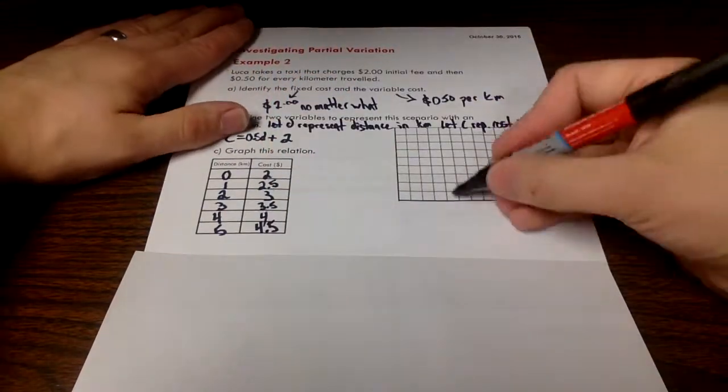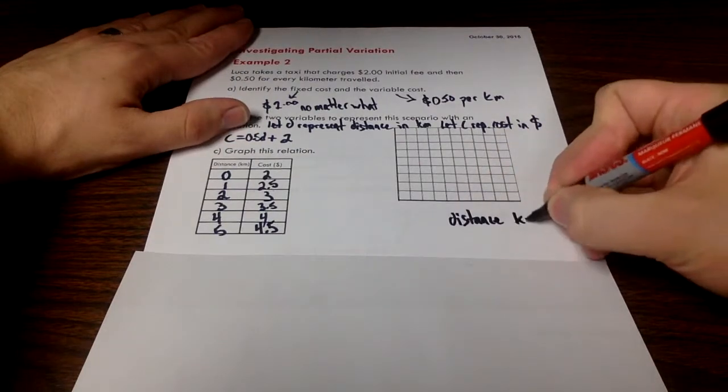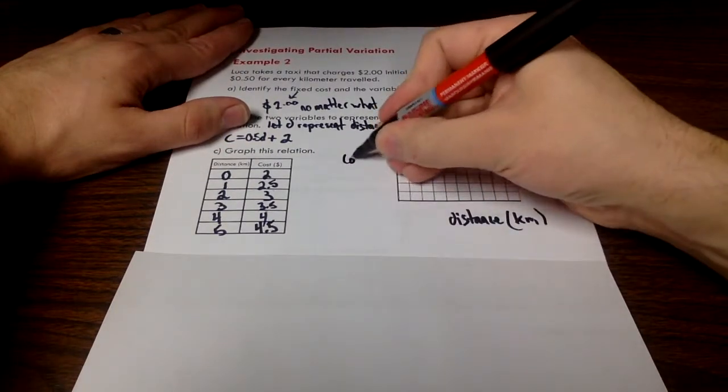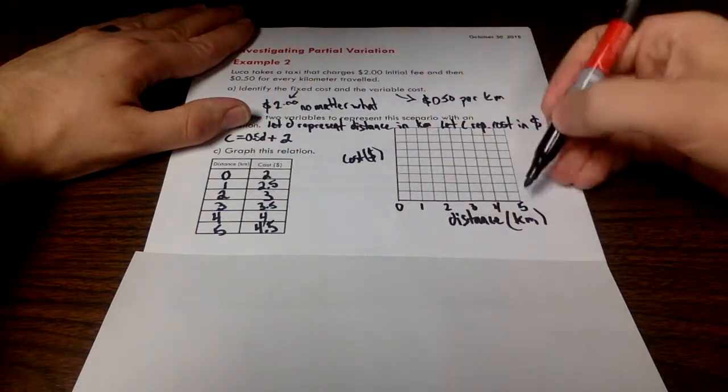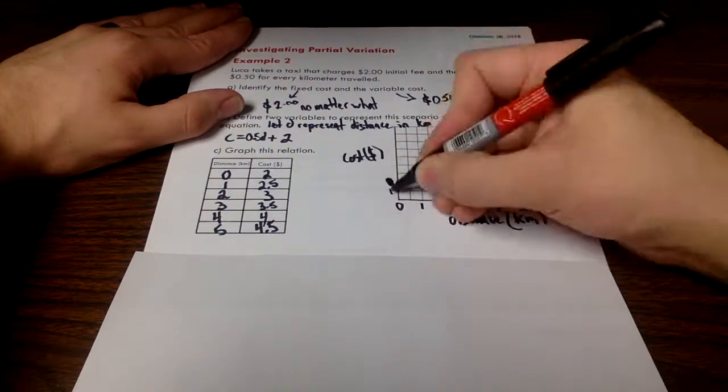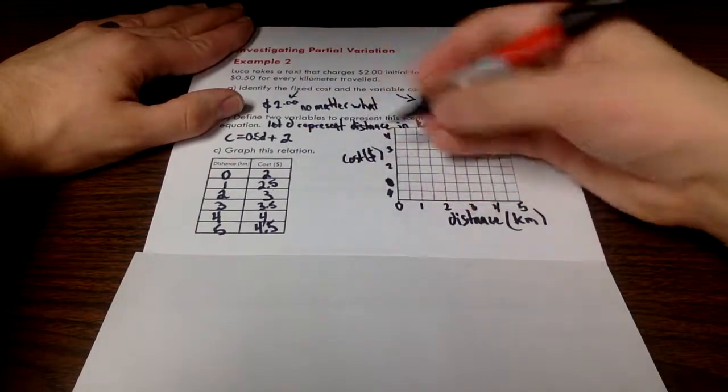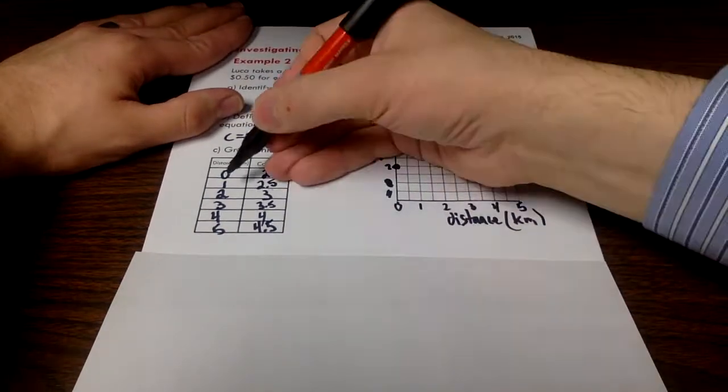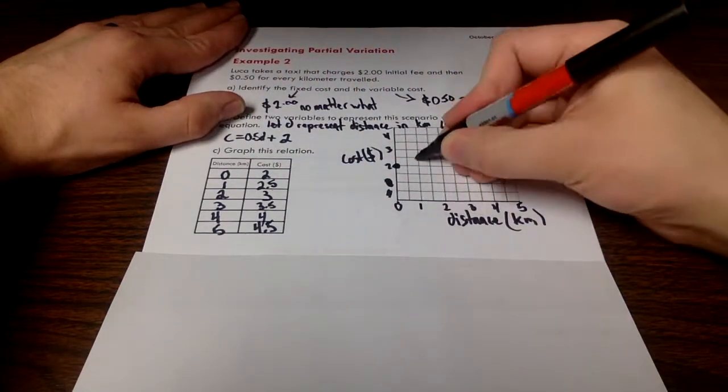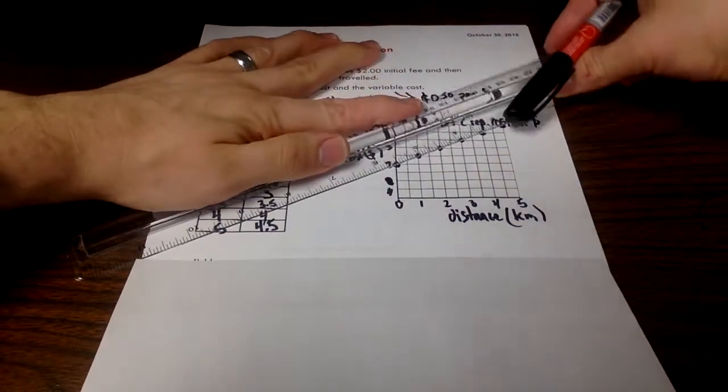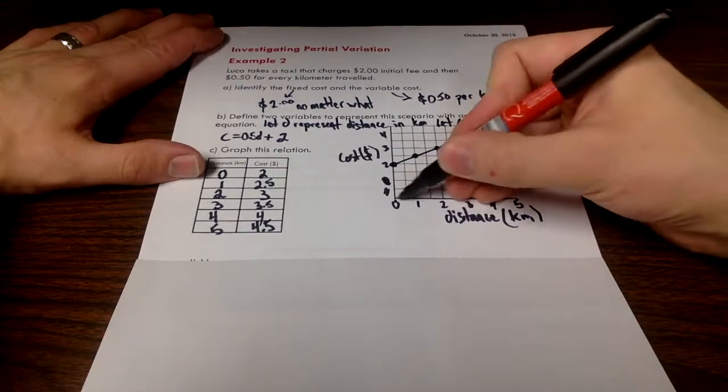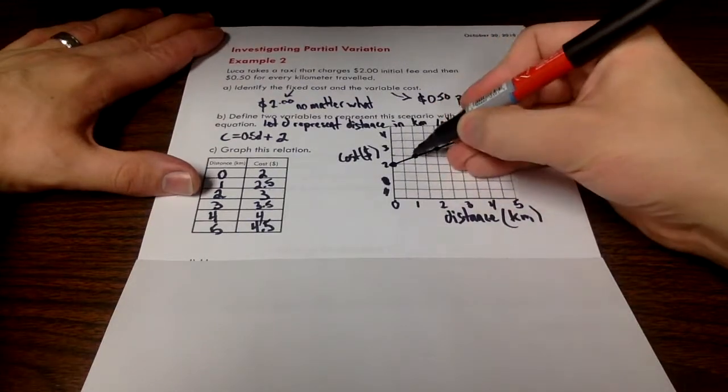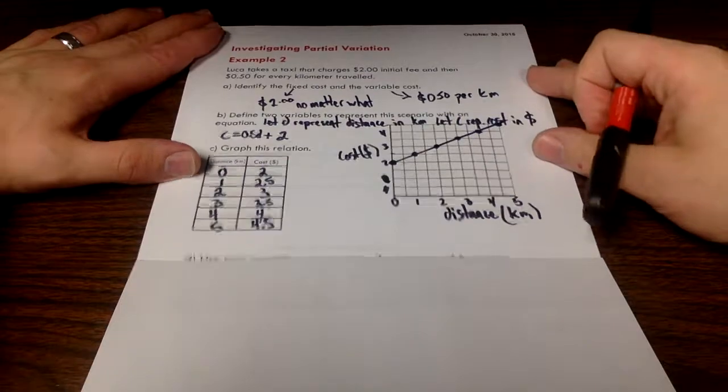To graph this thing, I'm going to let distance go on my x-axis, that's what I'm changing. I'm going to put the cost in dollars on the y-axis. I'm just going up by one kilometer each time. Let's make two squares $1. When I have zero distance, my cost is two, so I'm going to be starting right here. When I have one kilometer, I'm going to be at two and a half. There's my graph. This trend is linear. We're starting at $2 regardless of the kilometers I drive, and for every kilometer I add, I'm going up by 50 cents. Good representation of our relationship here.